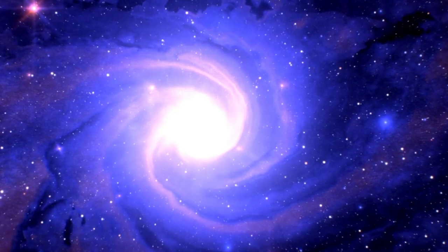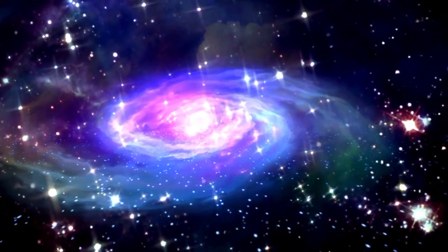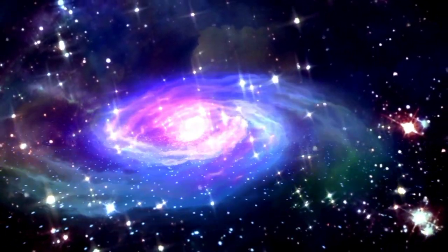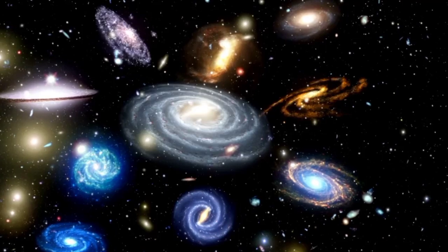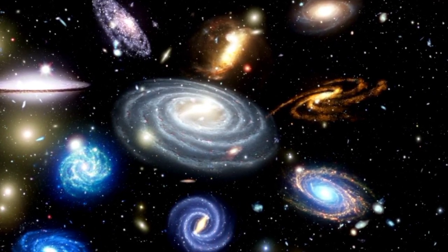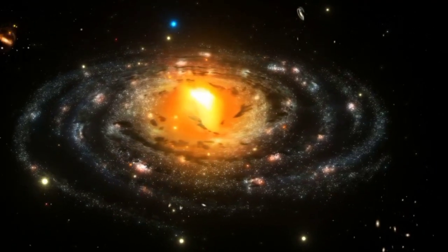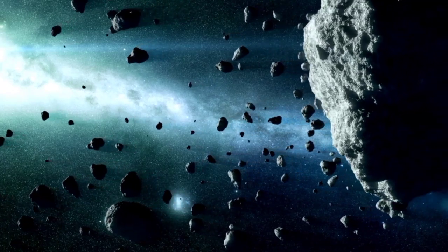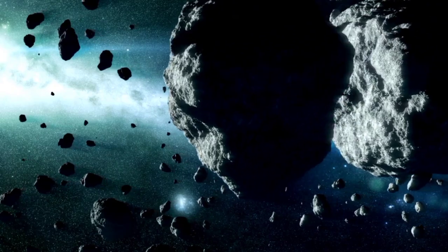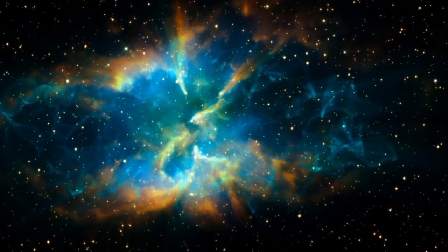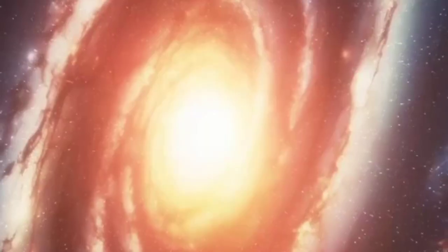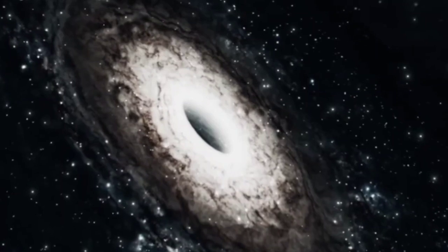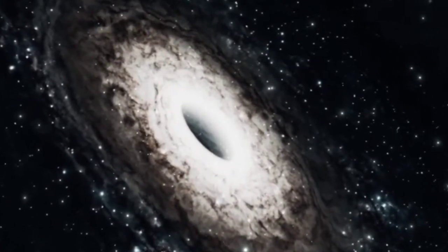As Betelgeuse continues its life cycle, this red supergiant is nearing its inevitable fate. While the timing of a supernova explosion remains uncertain, the event is a scientific inevitability. When it occurs, the explosion will be one of the most spectacular cosmic events observable from Earth. It is expected to outshine the full moon for weeks, casting shadows at night and remaining visible during the day. Despite the immense scale, Earth is not at risk from the radiation. At 725 light-years away, the energy would be diffused enough to pose no threat.